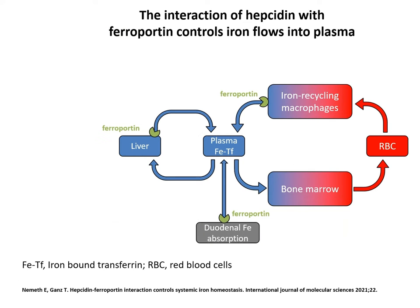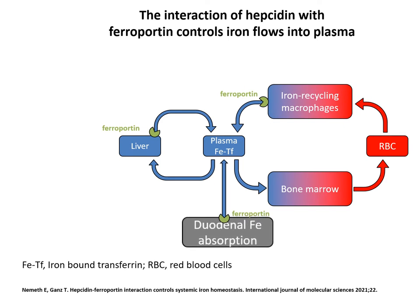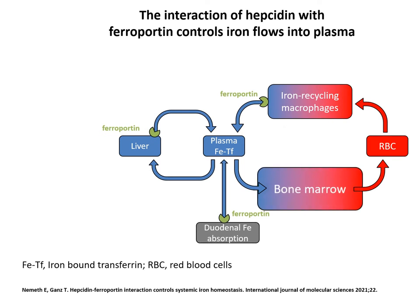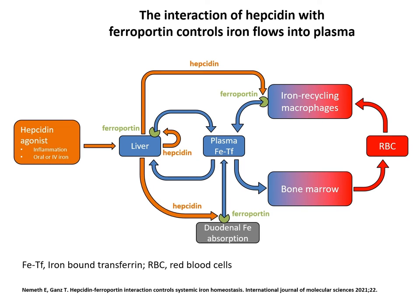Under homeostatic conditions, iron flows from the liver, macrophages, and gut duodenal cells into the plasma, replenishing the iron pool. This is then used by the bone marrow to produce red blood cells. When a hepcidin agonist is detected by the body, the liver upregulates production of the hepcidin peptide. Hepcidin binds to ferroportin, effectively shutting the gate to the body's iron supply.